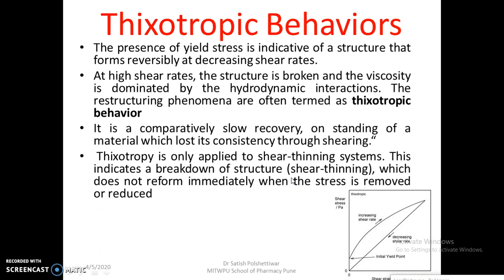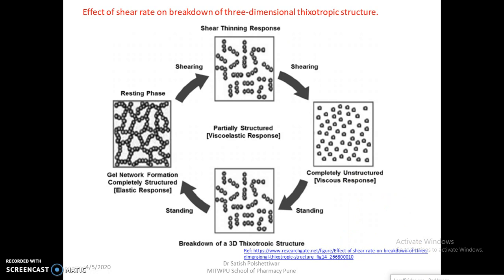The structure in a dilatant system that reforms reversibly is related to thixotropic behavior. At high shear rates, the structure breaks and viscosity is dominated by hydrodynamic interactions. Thixotropy refers to the comparatively slow recovery of a material that has lost its consistency due to shearing. Thixotropy is applied to shear thinning systems where the breakdown of structure does not reform immediately when stress is removed or reduced.